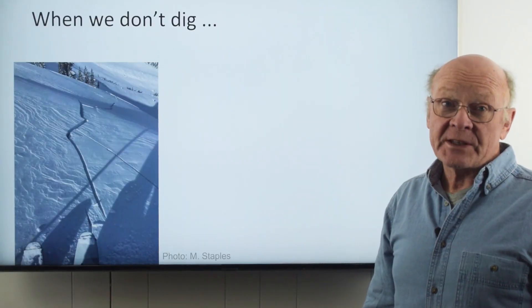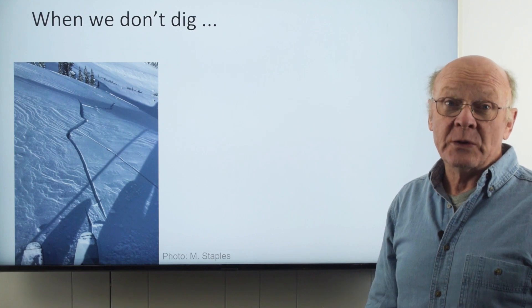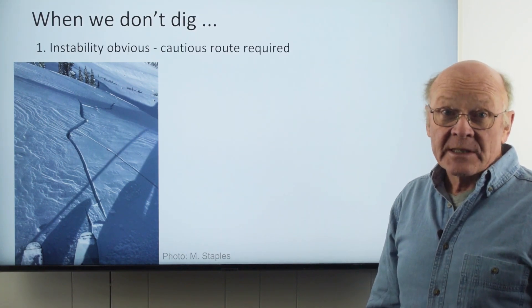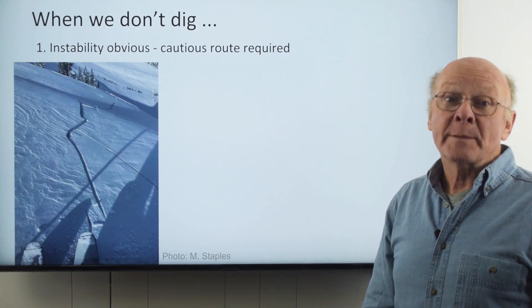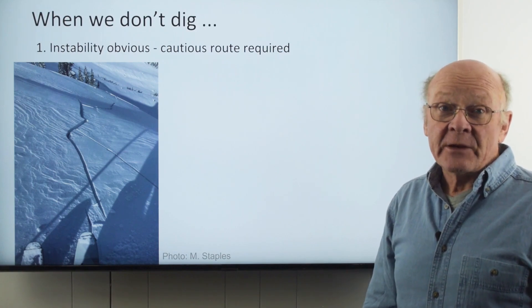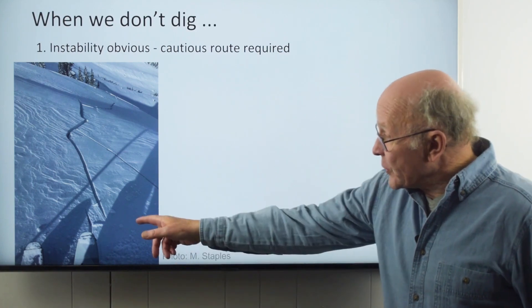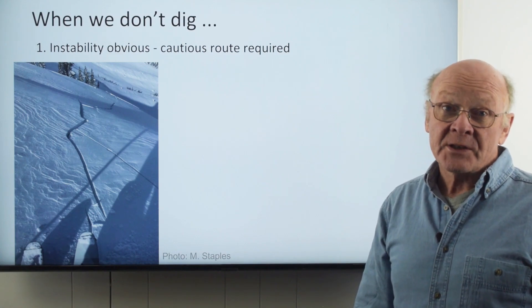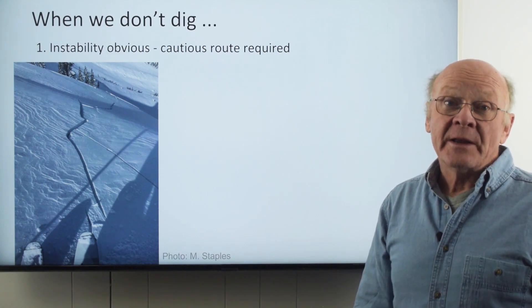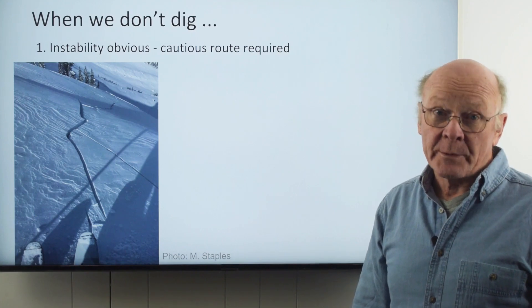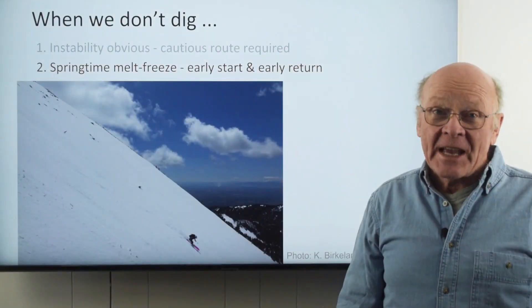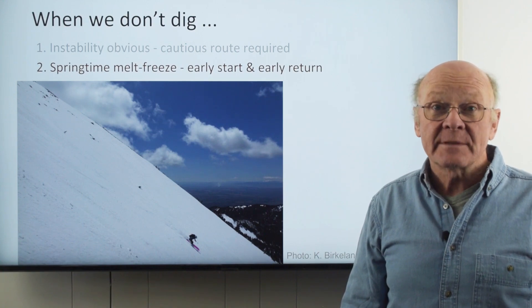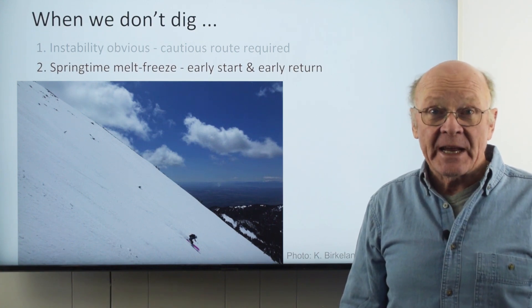Now let's look at situations in which we often don't do instability tests. First, the instability might be obvious, either from the bulletin or observations. If we see recent avalanches, shooting cracks, or are feeling woomphs, we select a cautious route that avoids any slope that can produce an avalanche big enough to bury or kill a person. Second, in the spring, when the upper snowpack is melted and we've frozen many times, we want to plan and manage our day.